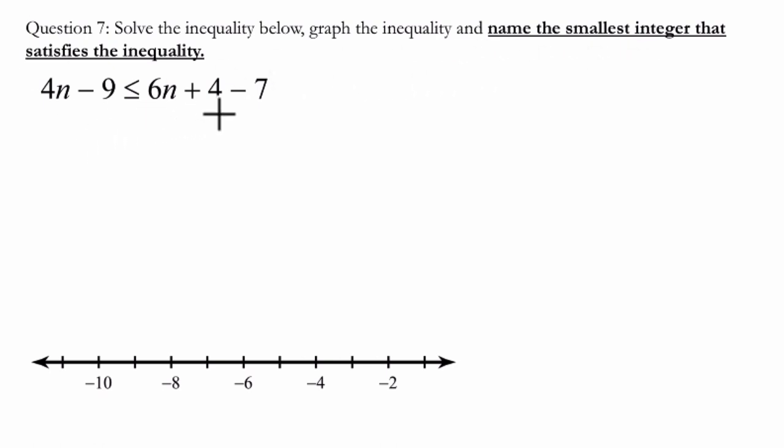First, I've got 4 minus 7 over here. I'm going to make that negative 3, combining those terms to make this more manageable.